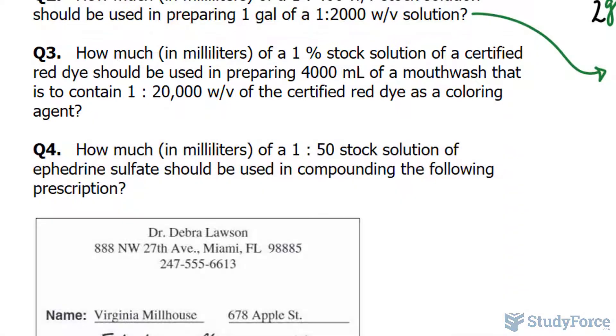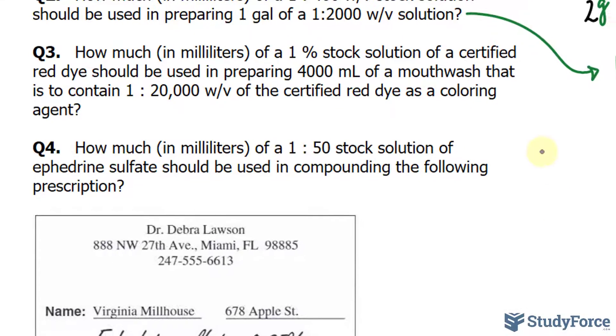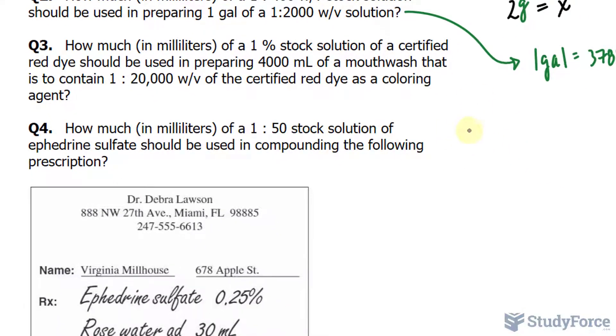So we've been told the concentration of the stock solution being 1%. Remember the formula Q1C1 is equal to Q2C2, where that's the quantity of the stock solution and its concentration being multiplied, and on the right side of the equation that's the quantity and the concentration of the final solution. We've been told the concentration of the stock solution being 1%. 1% needs to be converted into decimal form, so we divide this by 100% and we end up with 0.01.